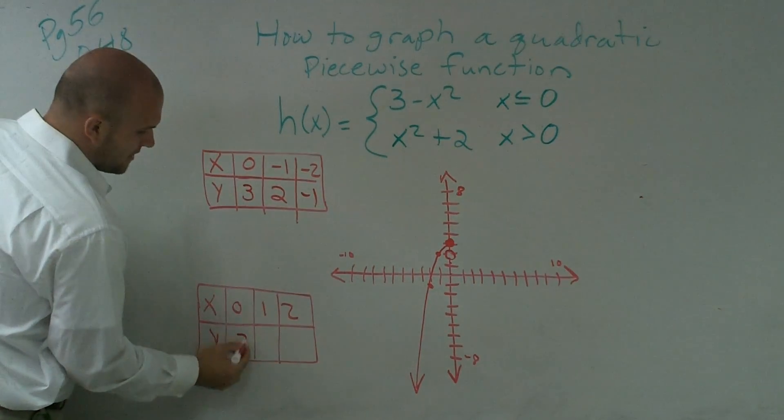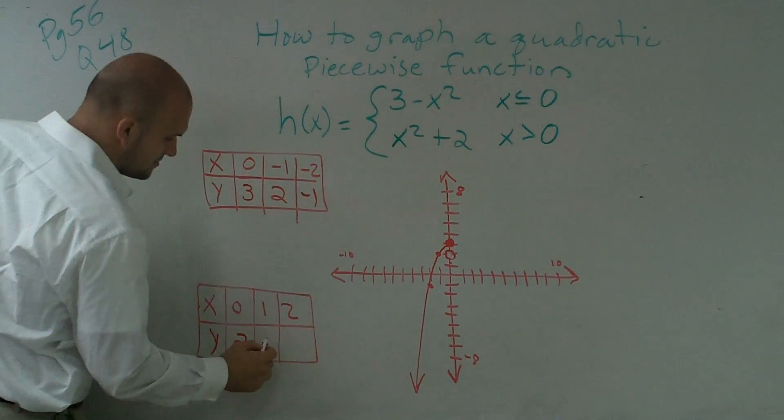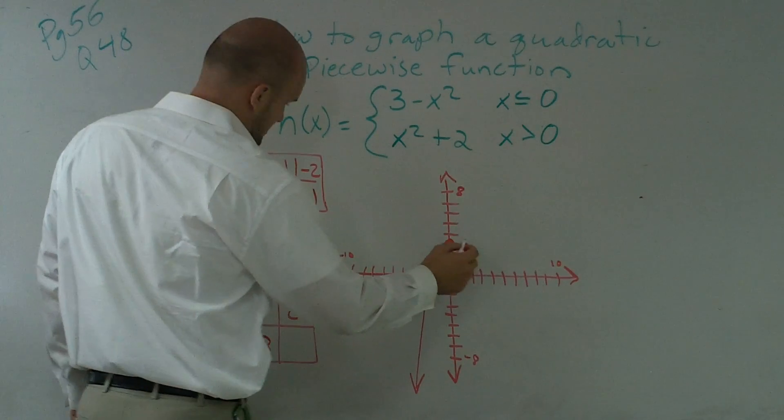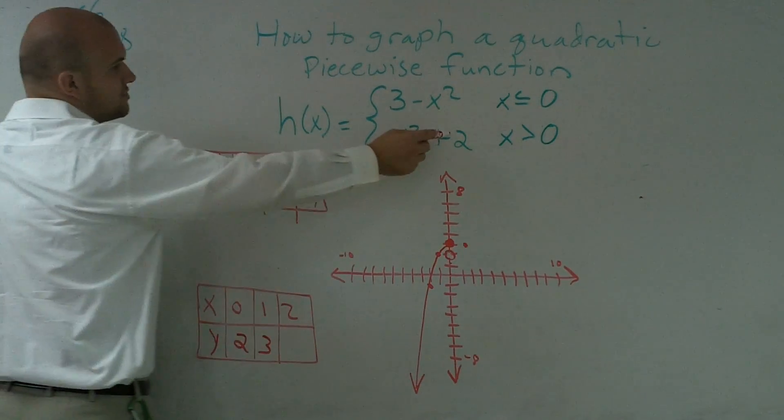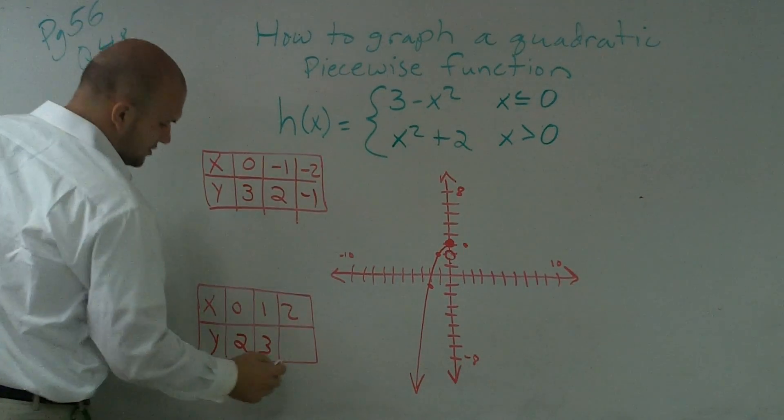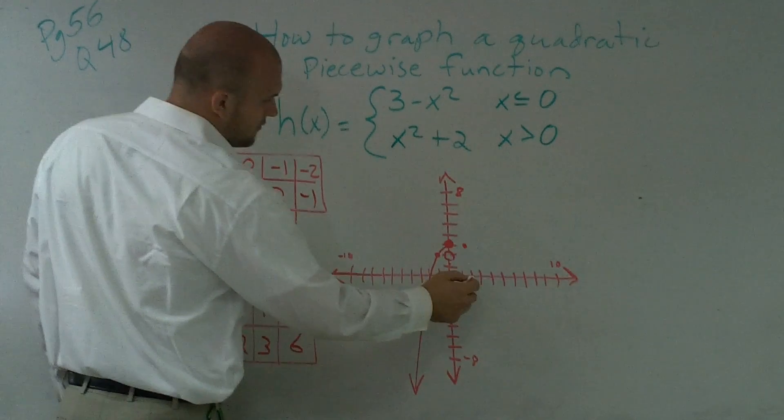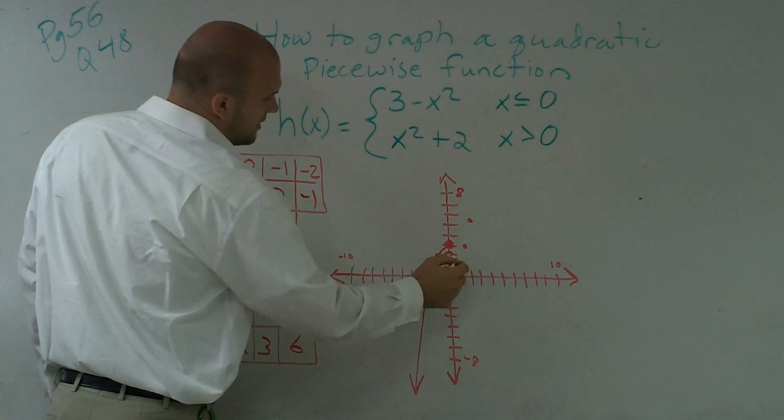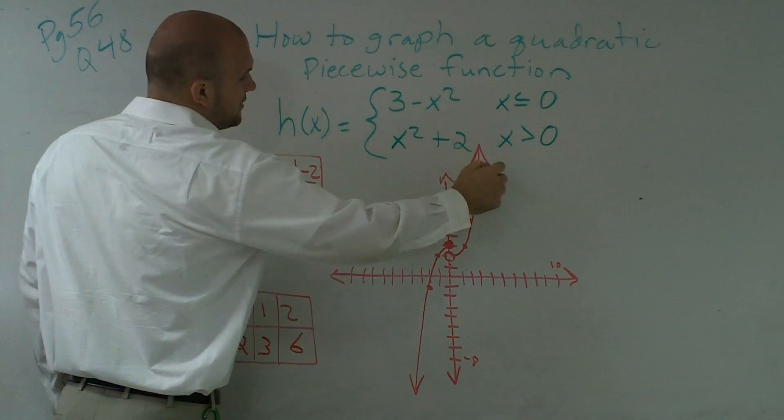So at 0, we have 2. Then I plug in 1. 1 squared plus 2 becomes 3. So I go over 1, up 3. And then we plug in 2. 2 squared is 4, plus 2 becomes 6. So I go over 2, up 6. 1, 2, 3, 4, 5, 6. And I notice my graph is going to follow this path.